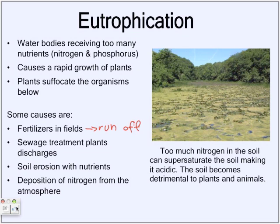There are other causes of eutrophication, like soil erosion, and deposition of nitrogen from the atmosphere. There's acid rain — the rain has nitric acid, and it lands in the body of water, causing an overload of nitrogen again. So that's what causes eutrophication. There are many causes, but they all end up with the same result.